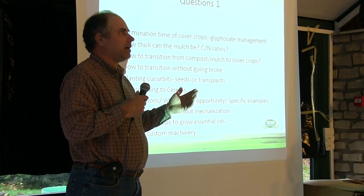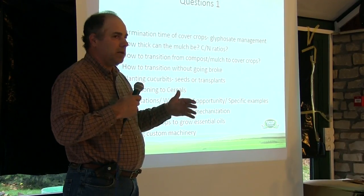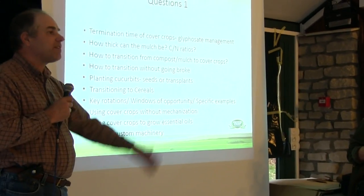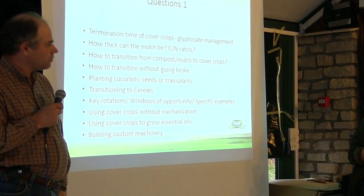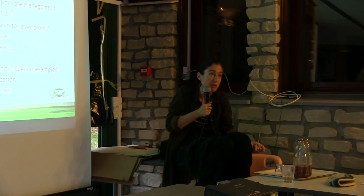Legumes and radish maybe one to 20 or one to 15 — very low. When you have a cereal like rye that grows tall, it may be 40 or 50 to one. A graminée that is very developed has a lot of cellulose and little nitrogen, so it has roughly a 40:1 ratio.